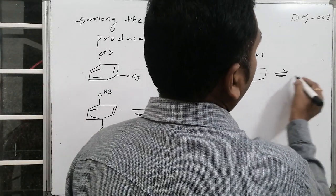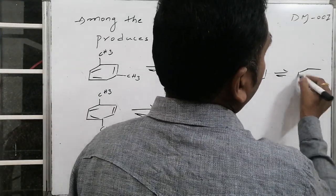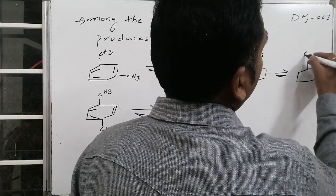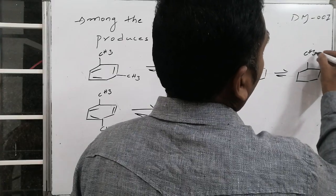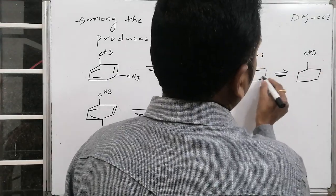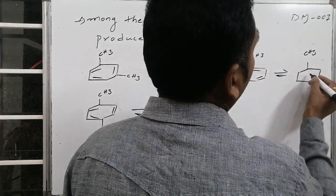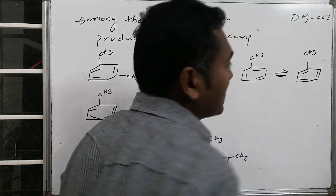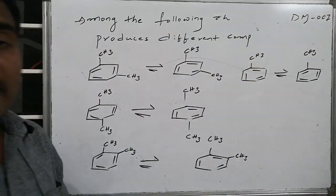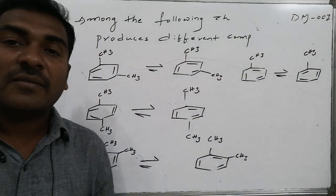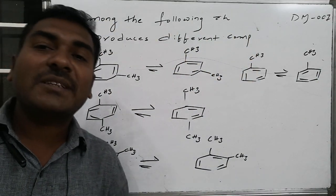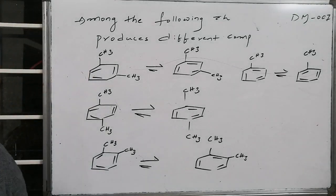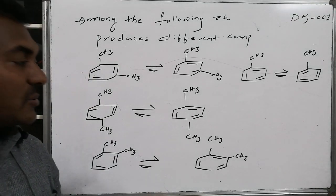Similarly, for methylbenzene (toluene), there are two Kekulé structures with alternating double bonds. These are the varieties of equilibria existing between the given starting materials.